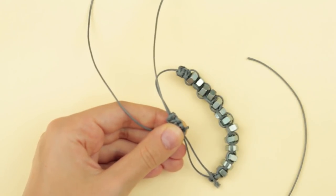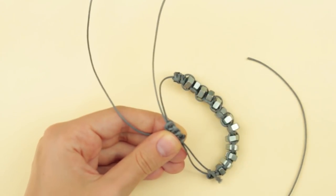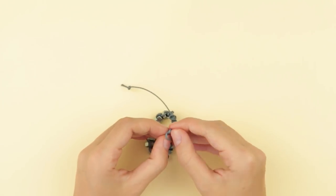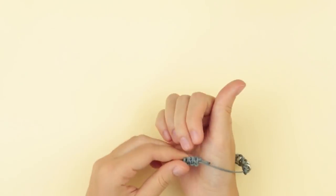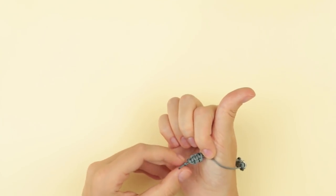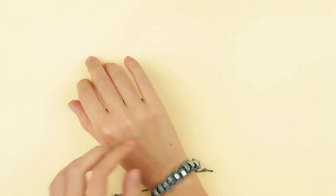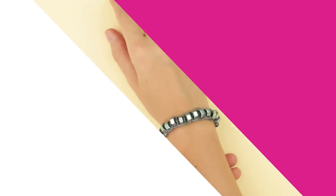Cut off the excess clasp ends and melt them with a lighter. You can tie knots on both cords and secure. Try the bracelet on. Everything is okay and the clasp works well. Done! We've woven a fabulous handmade Shambhala nut bracelet.